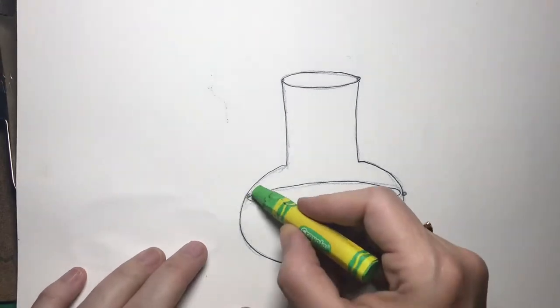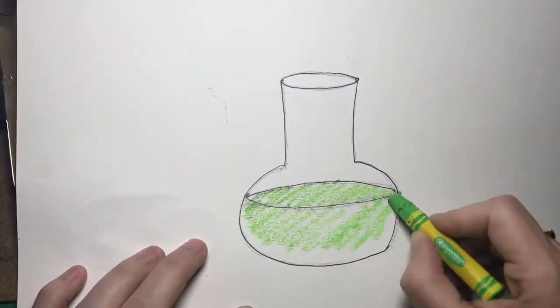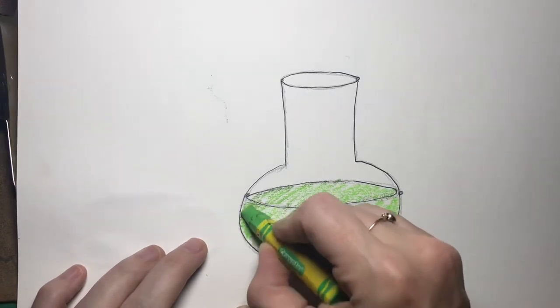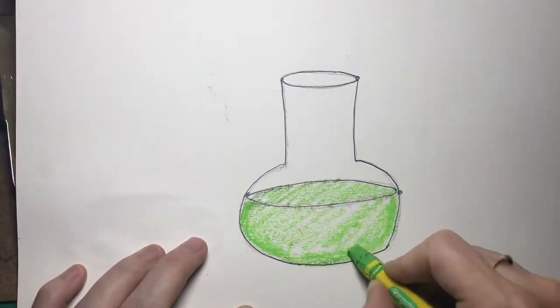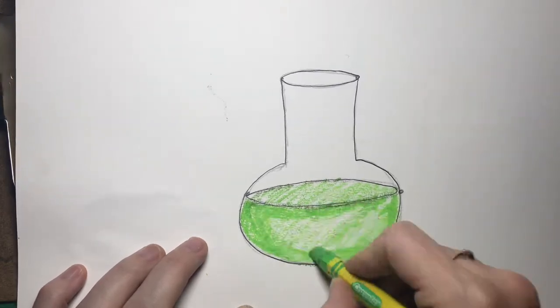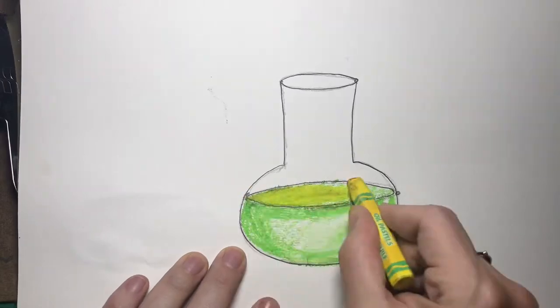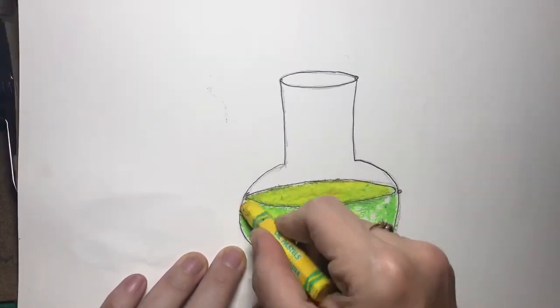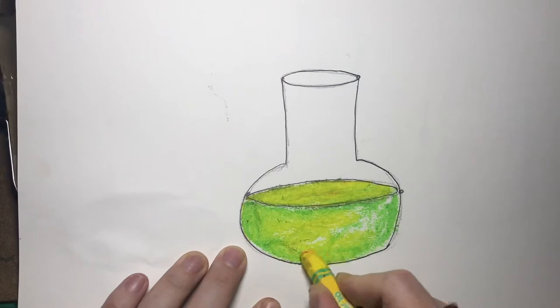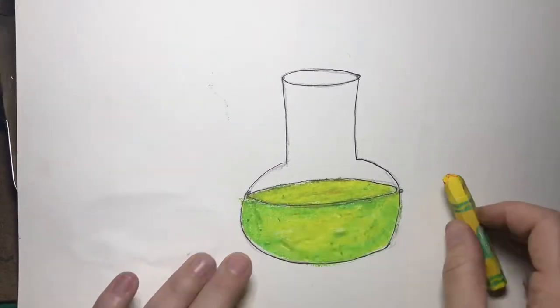All right, it's time to make a potion. When you're making your potion think about using at least two different ingredients. Here I'm using a light green oil pastel. Oil pastels are great for blending and mixing. Now I'm adding a second ingredient, a completely different color of oil pastel. Notice I'm coloring the top of the liquid and the side of the liquid.